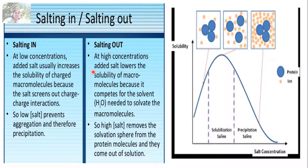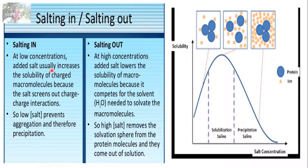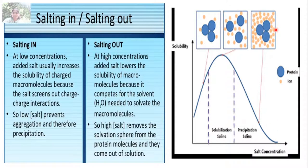At high concentration, added salt lowers the solubility of macromolecules because it competes for the solvent needed to solvate them. High salt removes the solvation sphere from the protein molecule and they come out of solution. There is also salting in: low concentration of added salt usually increases the solubility of charged macromolecules because the salt screens out charge-charge interactions, preventing aggregation and therefore precipitation. This graph shows that high salt concentration lowers solubility, causing protein precipitation.